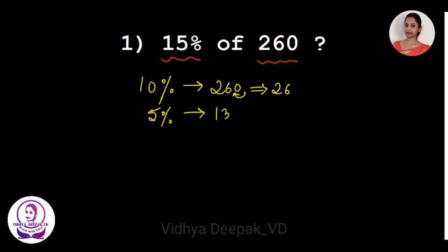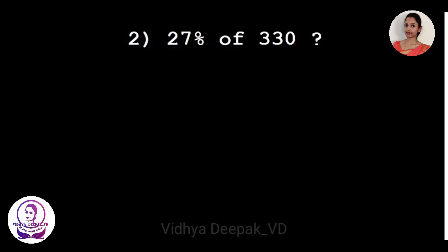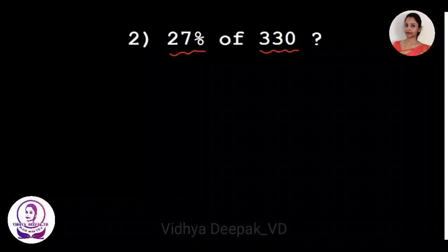Now we need 15 percent of 260, which is nothing but 10 percent plus 5 percent. That's 26 plus 13, which equals 39. So 15 percent of 260 is 39.